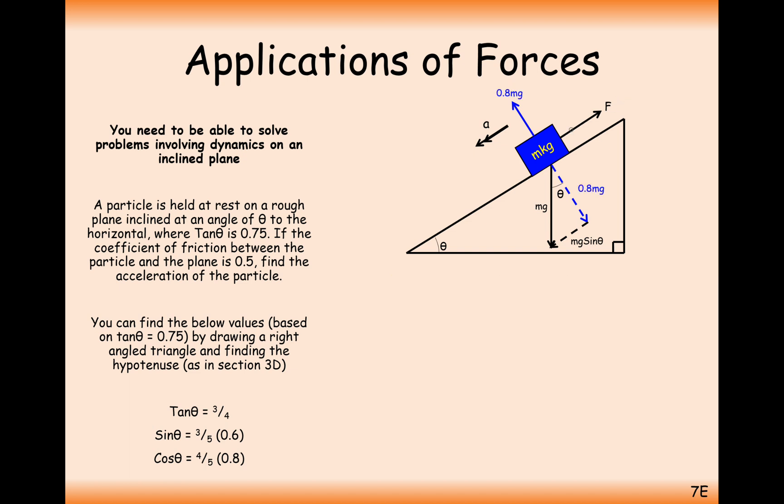What do we do next? We're going to now have to figure out the force of friction, so F equals mu R comes next. That's going to be 0.5 times 0.8 mg. Put those two together, you get 0.4 mg.